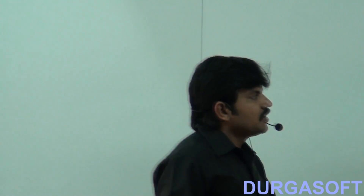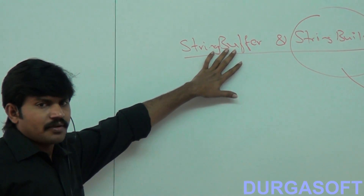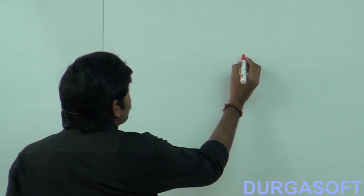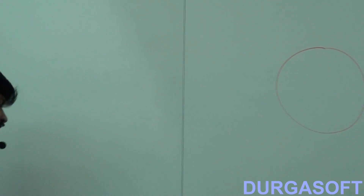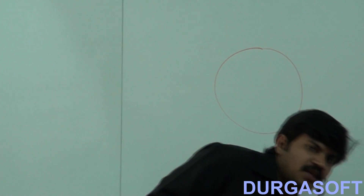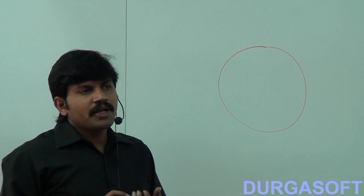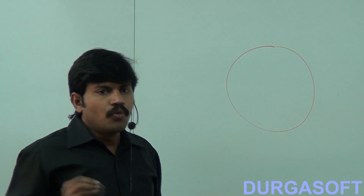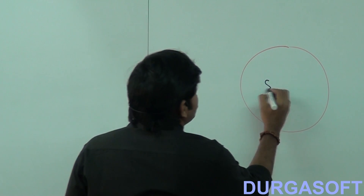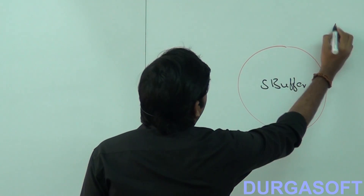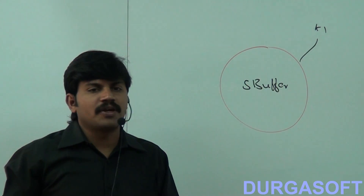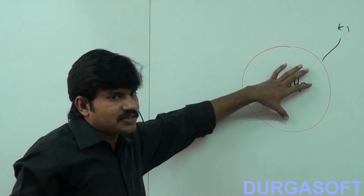StringBuilder is exactly the same as StringBuffer. But what is that small difference? In StringBuffer, every method is synchronized. Because of this, at a time only one thread is allowed to operate on the StringBuffer object. Thread safety by default we are going to get.